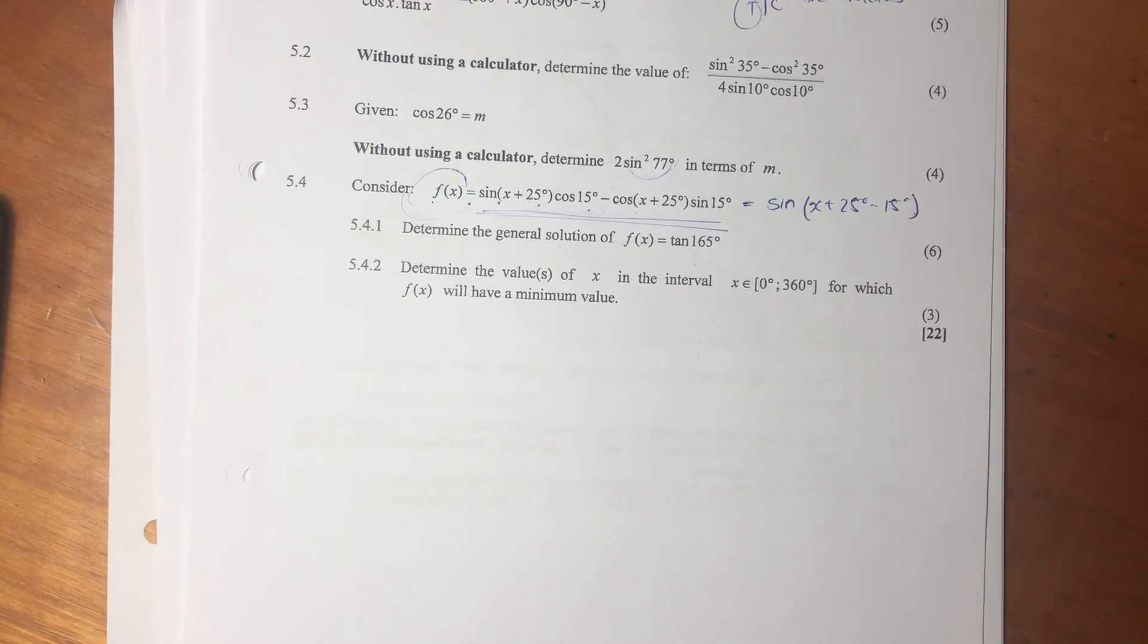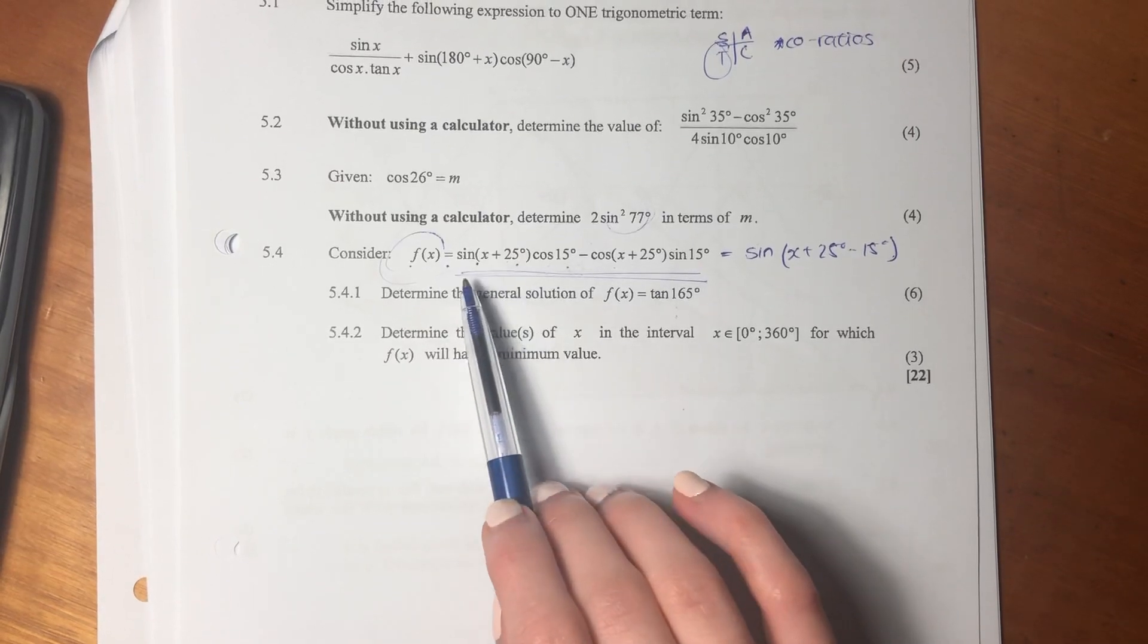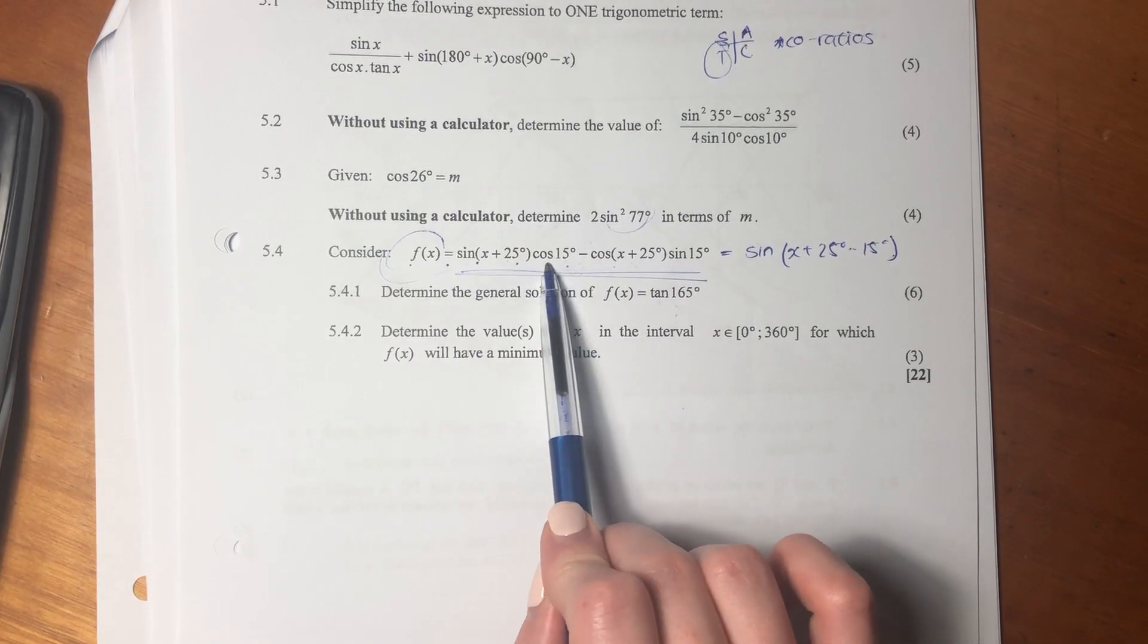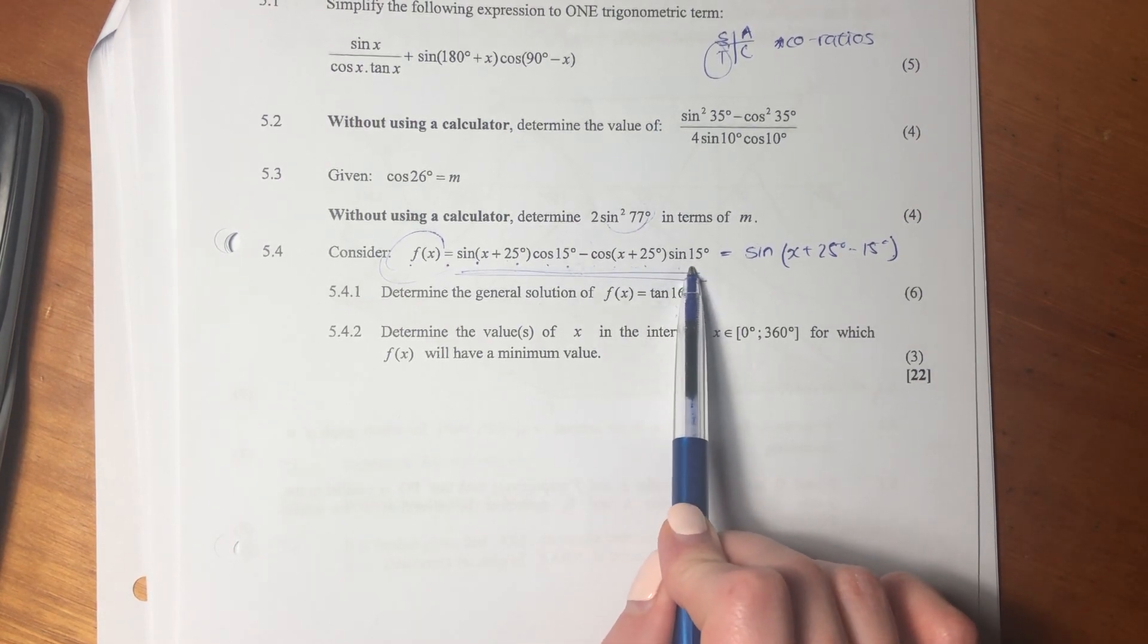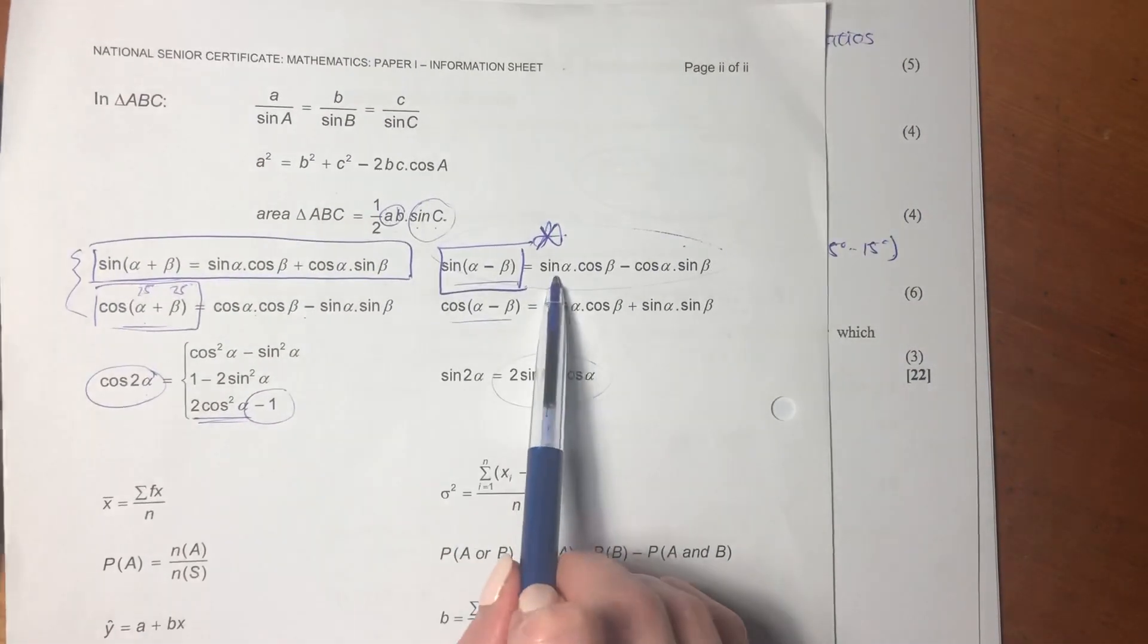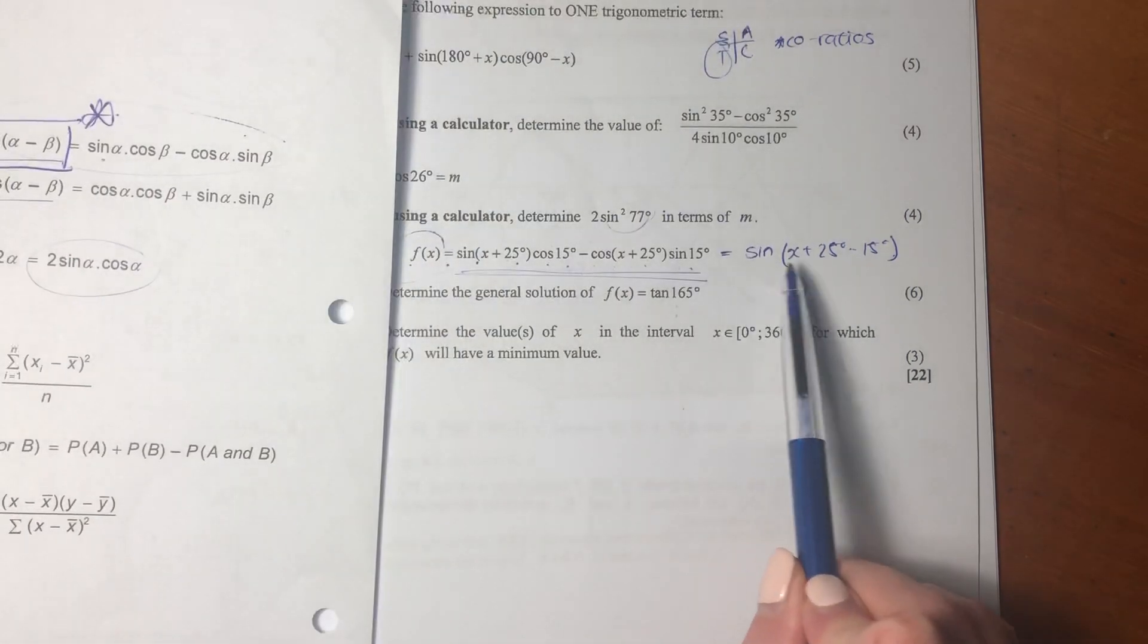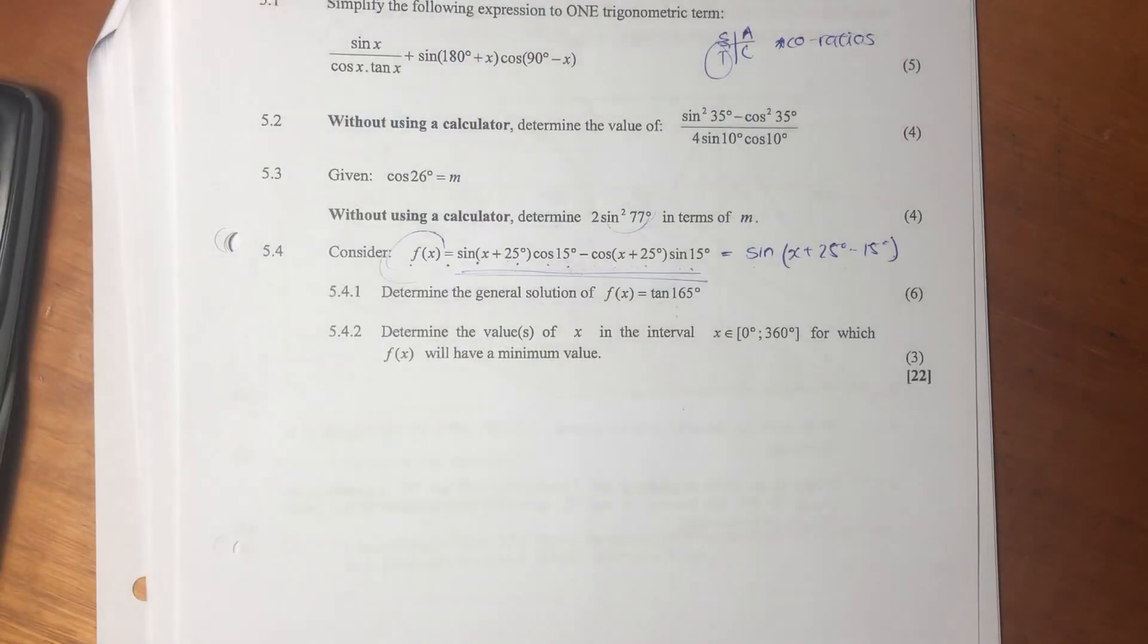Hey guys, let's just finish off this question. So 5.4 gives us this f of x graph, or trig function: sine x plus 25, cos 15, minus cos x plus 25, sine 15. So you should be thinking, oh, that kind of looks like an identity. It looks like this one here. So we know that it can be simplified into sine x plus 25 minus 15. Okay, probably going to have to use that when we answer the questions.